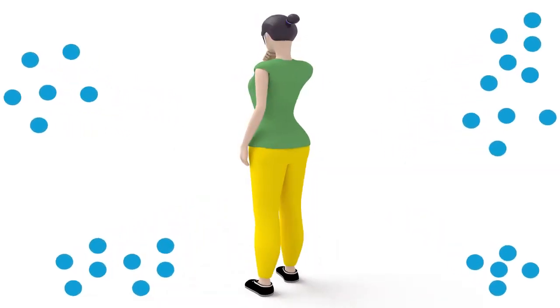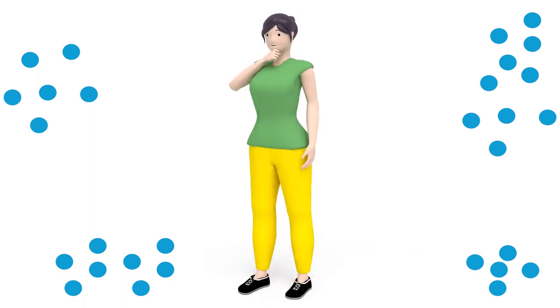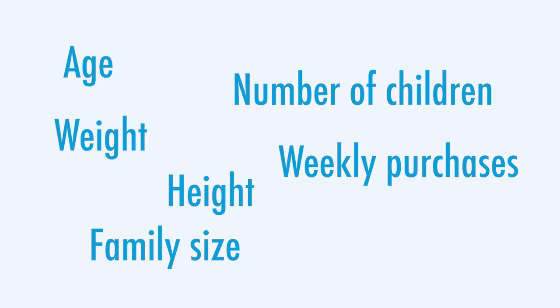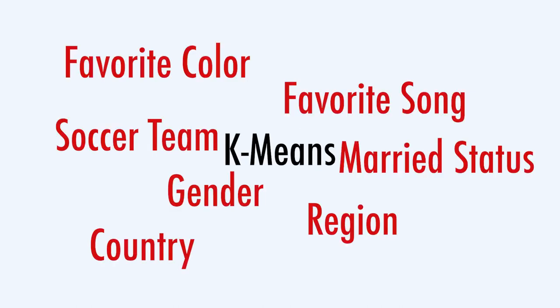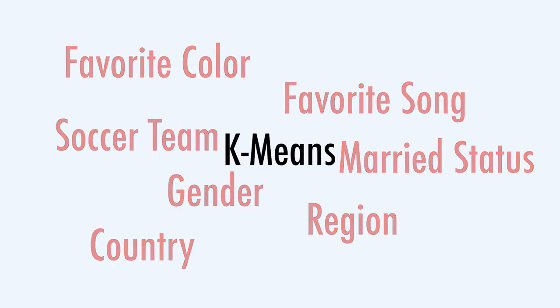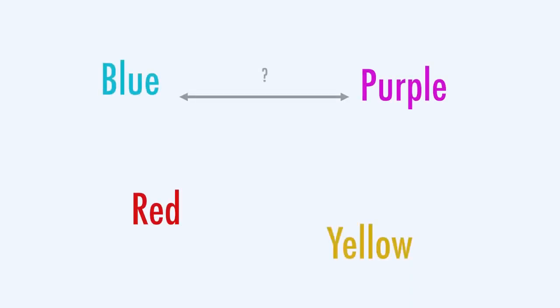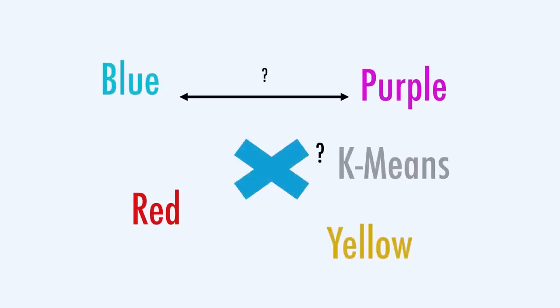Often, we find ourselves having to cluster data that contains both numerical features and categorical features. Standard clustering algorithms such as k-means do not work with categorical data by default. Computing the Euclidean distance and the means in the k-means algorithm doesn't go well with categorical data.